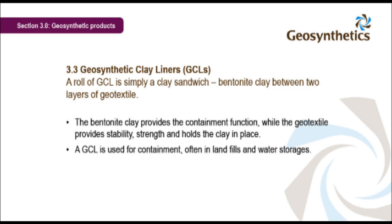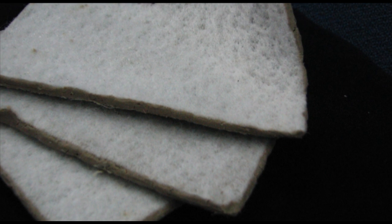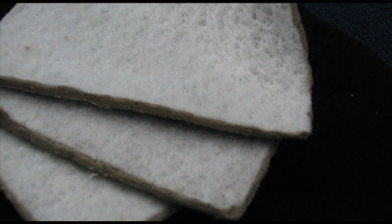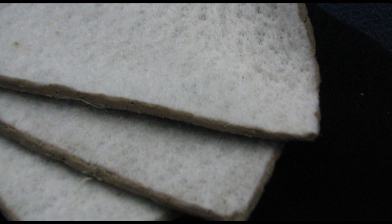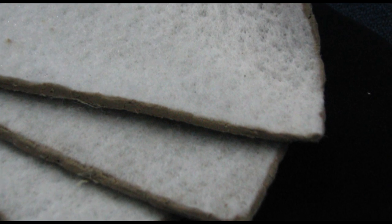Geosynthetic clay liners, or GCLs, are simply a clay sandwich: bentonite clay between two layers of geotextile. The bentonite clay provides the containment function, while the geotextile provides stability, strength and holds the clay in place. A GCL is used for containment, often in landfills and water storages. When the bentonite clay layer in a GCL comes in contact with water, it swells and seals, providing the low permeability layer.